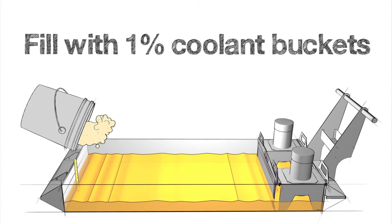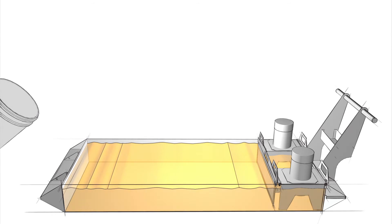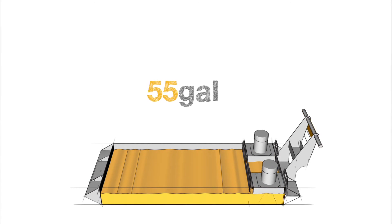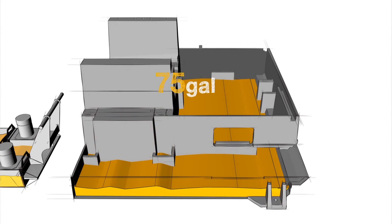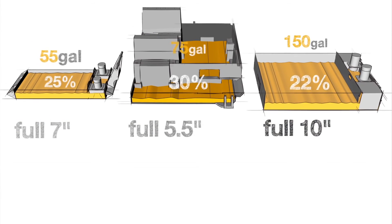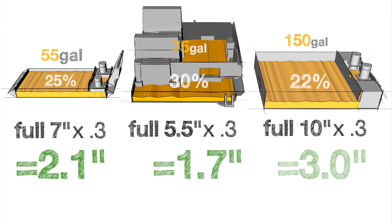This will return any size of tank back to a concentration between 6 and 10%. Let's put this method to the test with three examples using different tank sizes and different concentrations. We have a 55-gallon tank at a concentration of 25%, a 75-gallon integral tank at a concentration of 30%, and a 150-gallon tank at a concentration of 22%. For each of our tanks, we start with their respective tank full heights. Then we multiply each of these numbers by 0.3 to reduce the level of coolant down to 30%.